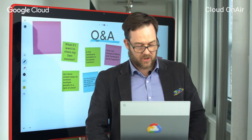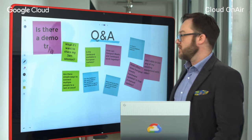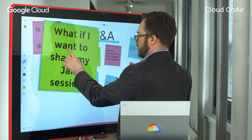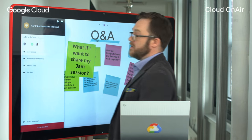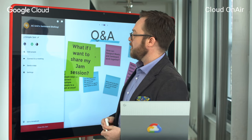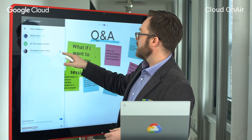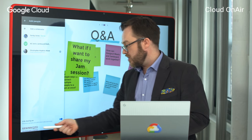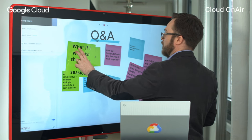We're back for the Q&A session. I've got a few questions here from my team who have been looking at your questions on the platform. First question: what if I want to share my Jam session? We've taken advantage of the sharing mechanisms within Google — it uses the exact same sharing paradigms. I simply pop open the side panel, I can add people to the Jam session, remove people if I want. We also have the ability to join Jamboard to Jamboard using a short code — another way to add people if they were in front of a Jamboard.